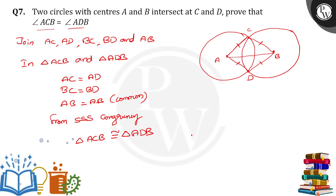When these triangles are congruent, then by CPCT (corresponding parts of congruent triangles), angle ACB equals angle ADB. Hence proved. Thank you.